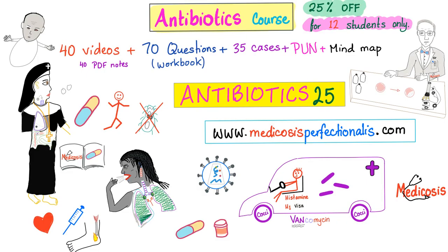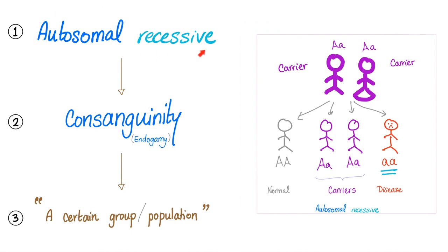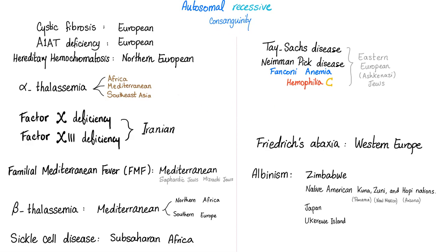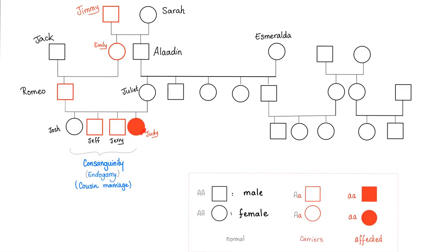There's a 25% discount on the antibiotics course for 12 students — go to medicosisperfectionist.com and use promo code Antibiotics25. Factor 10 deficiency is an autosomal recessive disease. Therefore, consanguinity is a factor, and it's going to be commoner in certain populations. In the case of factor 10 deficiency, it's more common in people living in Iran. Here is the autosomal recessive pedigree illustrating the point of consanguinity.